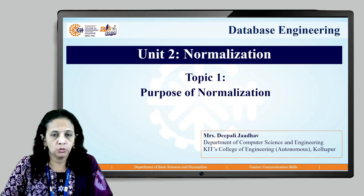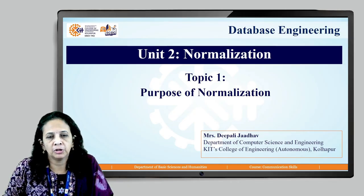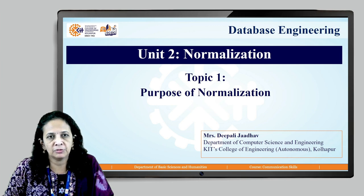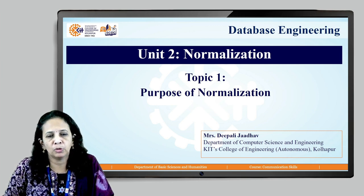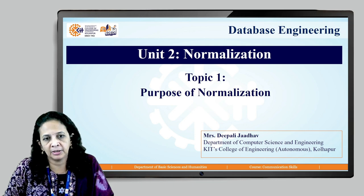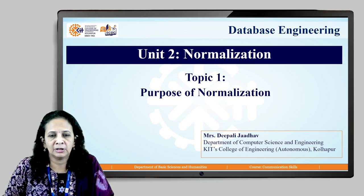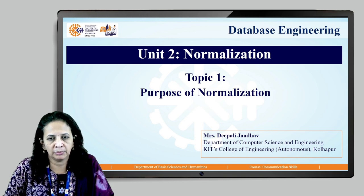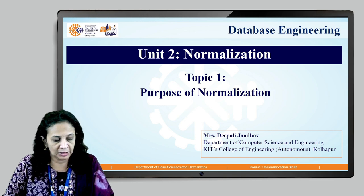Let us start with Unit 2: Normalization. In this unit, we are going to learn different topics such as the purpose of normalization, what are the anomalies and different types of anomalies when we perform database modification, the importance of functional dependencies, and then all the normal forms — the process of normalization, first normal form, second, third normal form, along with BCNF.